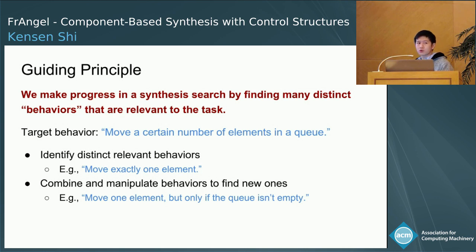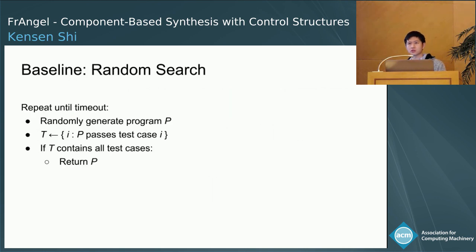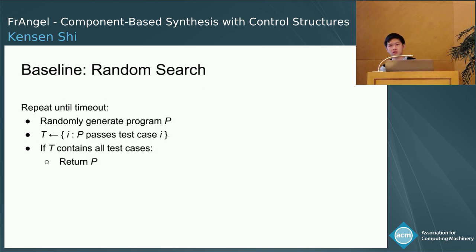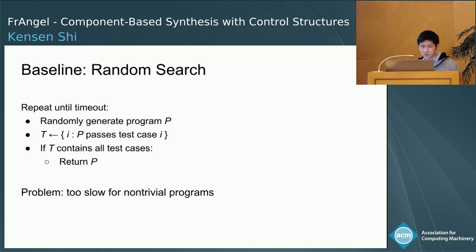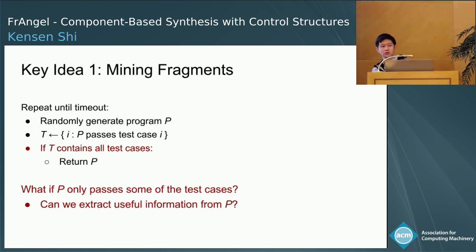We will apply this guiding principle to a baseline random search, and eventually this will lead to the Frangel algorithm. This random search just randomly generates programs until it finds one that passes all the test cases. Of course, this is too slow for non-trivial programs. We're going to extend this with two key ideas. Key idea one is called mining fragments. What if we find a program that passes some but not all of the test cases? We might be able to extract useful information from that program.